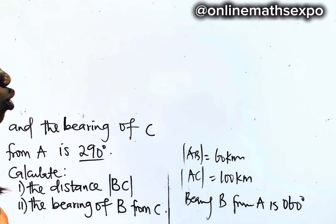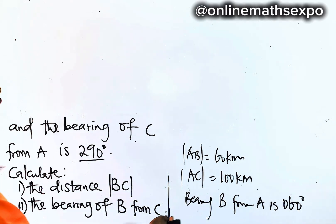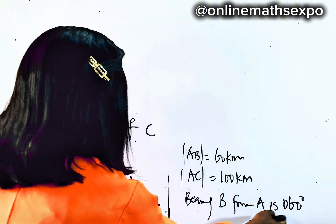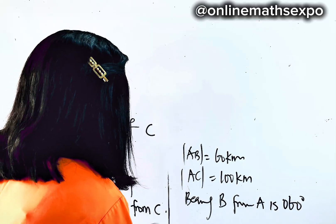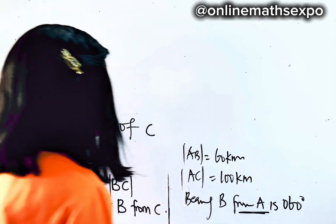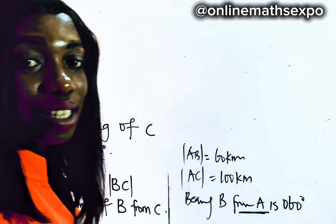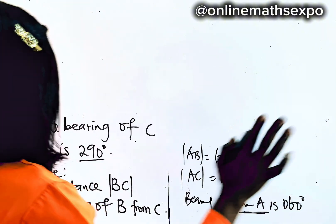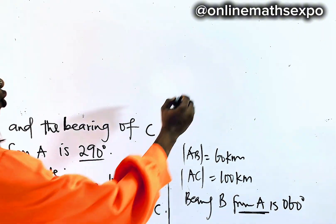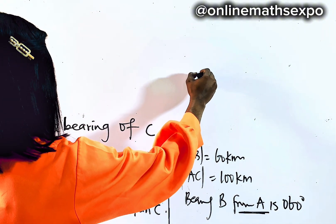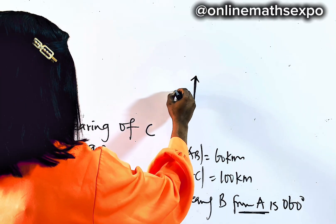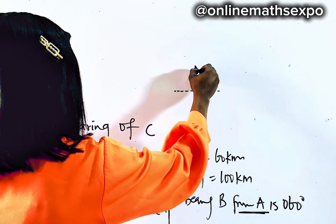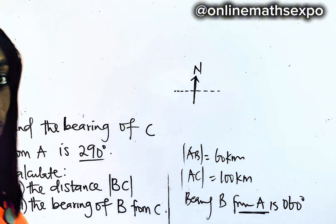What we do first is show the information. We are told the bearing of B from A is 60 degrees. Remember, in bearing the word 'from' matters a lot — it shows you the start point. So draw your cardinal point now and label it. Remember, this is the north. It's very important to show your north.